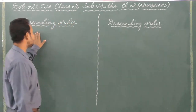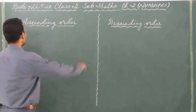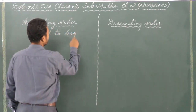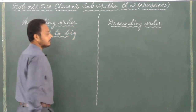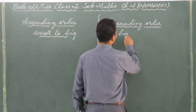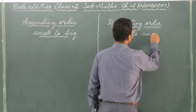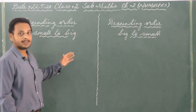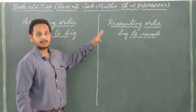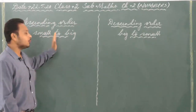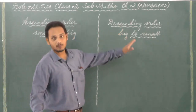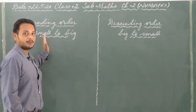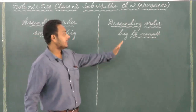First, what is the meaning of ascending order? Ascending means small to big. And descending means big to small. Kindly remember this — many students get confused in the names ascending and descending. Ascending means small to big, descending means big to small. Order means to arrange the numbers. So here we will arrange the numbers from small to big, and in descending, from big to small.